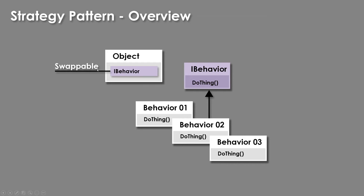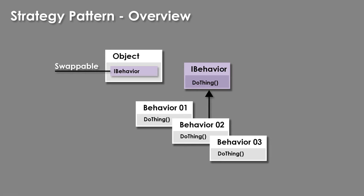This could be, for example, a weapon or an ability. It could be a type of movement — it could be pretty much anything you want, but some type of behavior. And maybe at this point in the game we want this behavior and then that'll run, and then we can swap it out and things can change during gameplay, which is super important for building a good modular system.